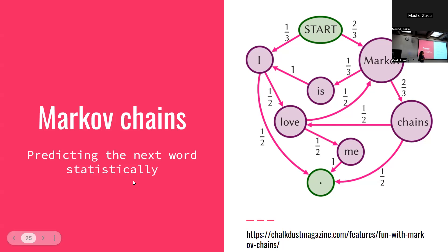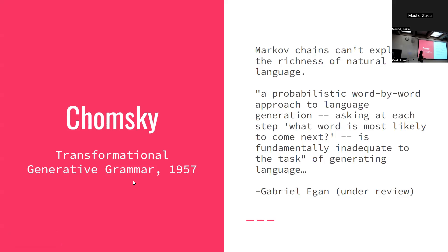Noam Chomsky, with his big theory of transformational generative grammar in 1957, said Markov chains cannot explain the richness of natural language — this cannot be it. Natural language is too complex; a child learning language doesn't produce Markov chains. He had an elaborate theory of brain structures underlying language. A probabilistic word-by-word approach to language generation — asking at each step what word is most likely to connect — is fundamentally inadequate to the task of generating language. This was Chomsky's argument.